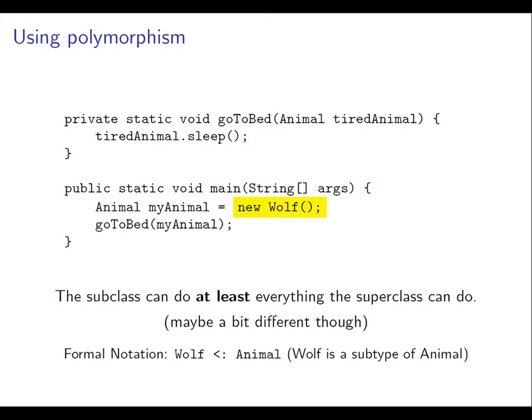So here we have exactly the same method again: the go-to-bed method is taking an arbitrary animal. Now we're invoking it but this time we're passing it a new Wolf object. That should work just fine, and the point is that the result of the sleep message being sent to the animal should be the appropriate implementation of the sleep method in the Wolf class.